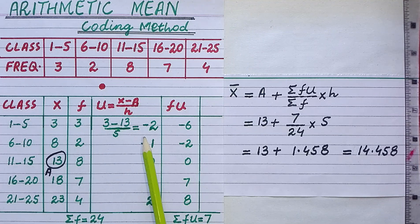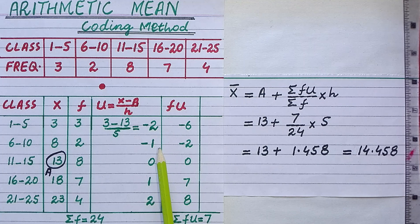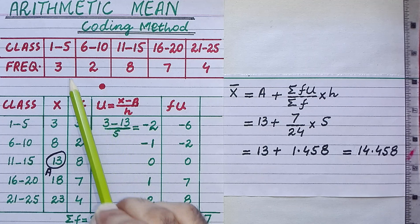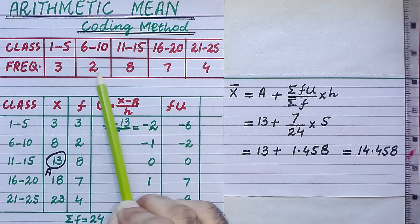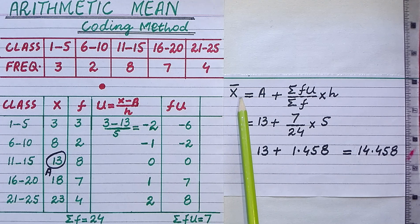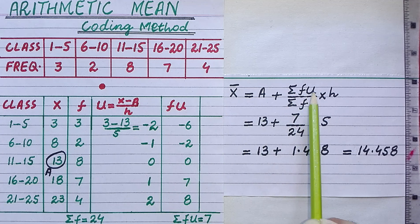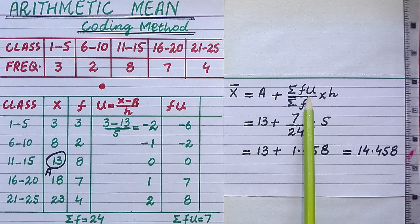In this video we are going to discuss how we can find the arithmetic mean of grouped data by coding method. The formula to find arithmetic mean by coding method is: x̄ = a + (Σfu / Σf) × h.